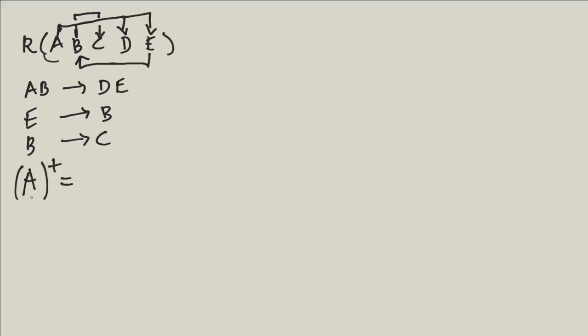My first attempt is to try to find the relation by calculating the closure of A, my essential attribute. From A, I can trivially go to A. But I need A and B together to determine D and E, so that dependency is not valid here. I don't have E and I don't have B, so A alone is not a candidate key.